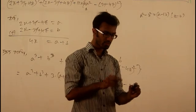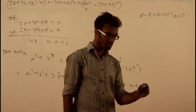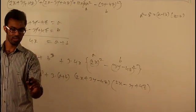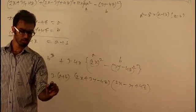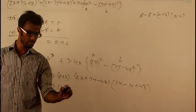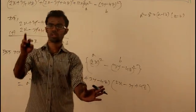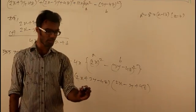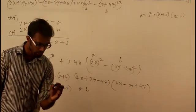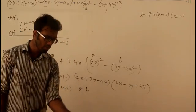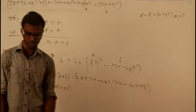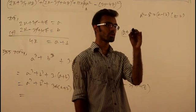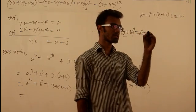3y minus 4z cube plus 12x square. 3 into a plus b into 2x plus 3y minus 4z. 3a minus 4z cube plus 12x square.